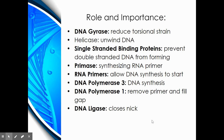Primase is responsible for synthesizing the short RNA primers which allow DNA synthesis to begin. DNA polymerase 3 starts at the free 3' hydroxyl group on the closest RNA nucleotide to synthesize DNA. Therefore, it proofreads from 3' to 5'. DNA polymerase 1 uses a 5' to 3' activity to cut out the RNA primer, which replaces the RNA nucleotides with DNA nucleotides.